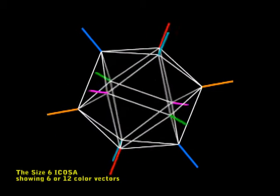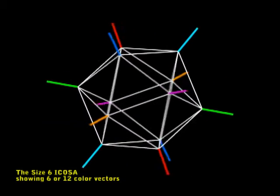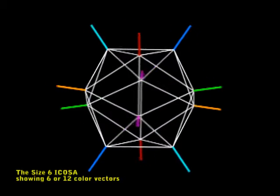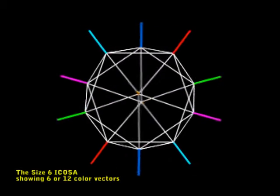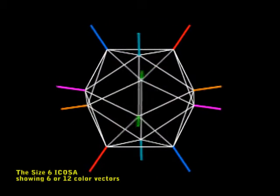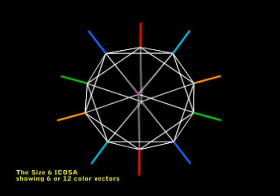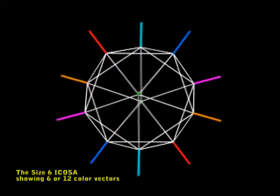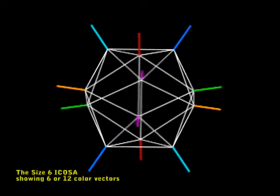So I'm going to start by showing you the size 6 icosa. And I'm showing you the vectors. There are 6 vectors, but when they go through, it makes 12 vectors. These vectors are extremely important. This is what gives us the perfect order in DNA geometry.